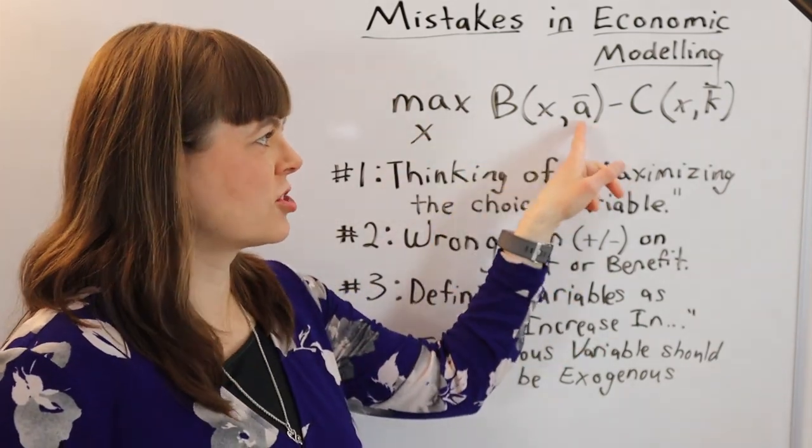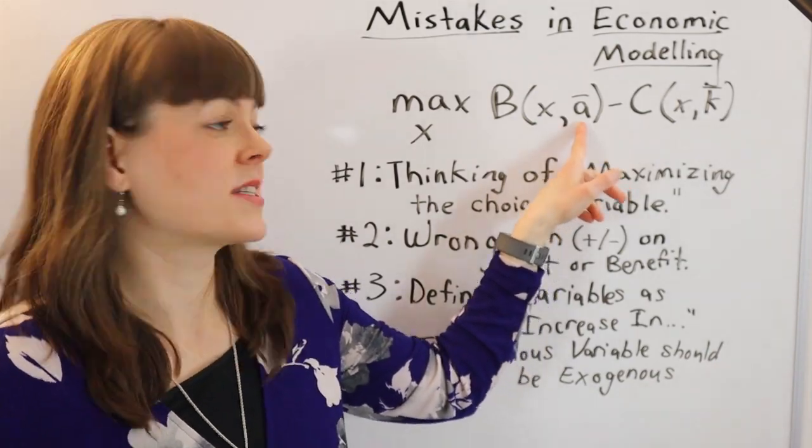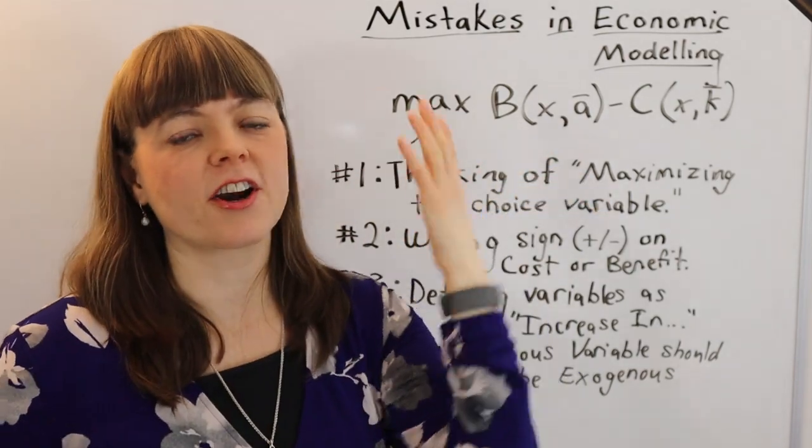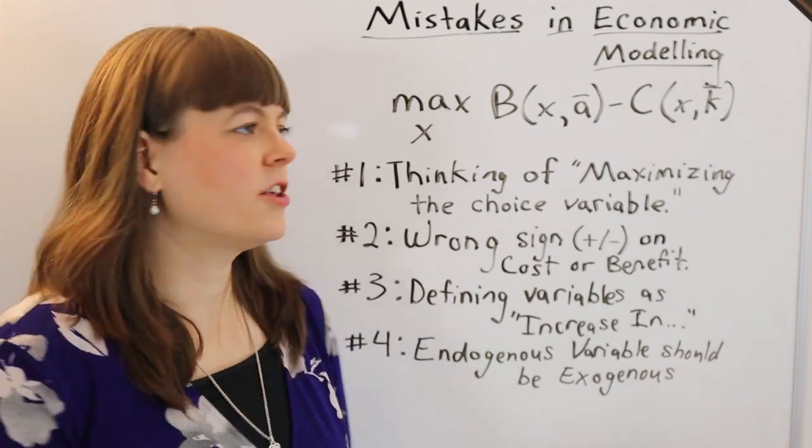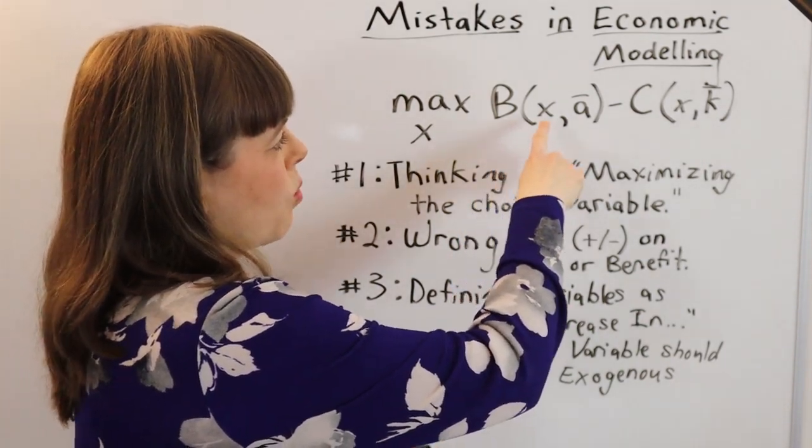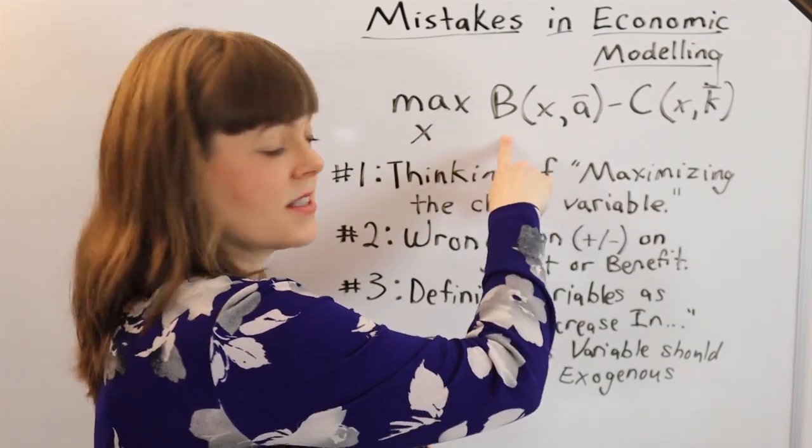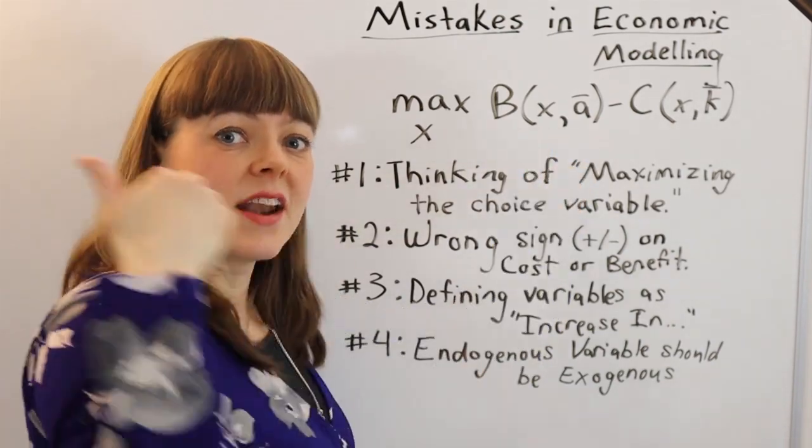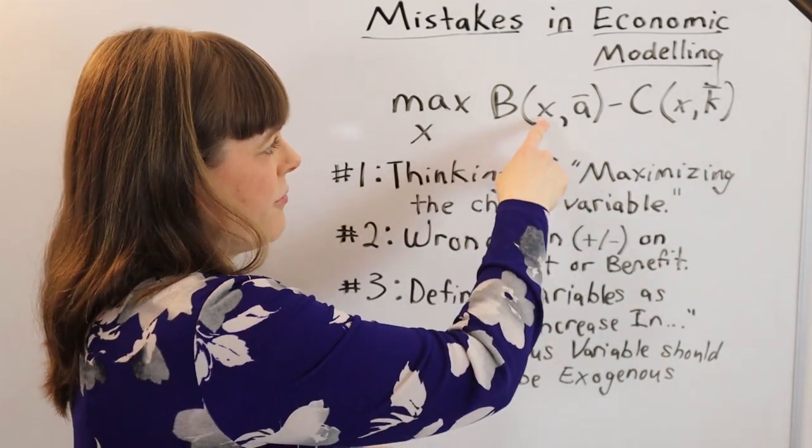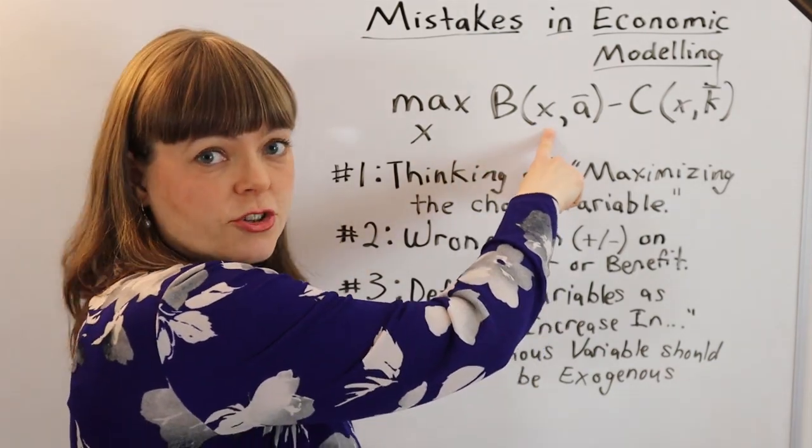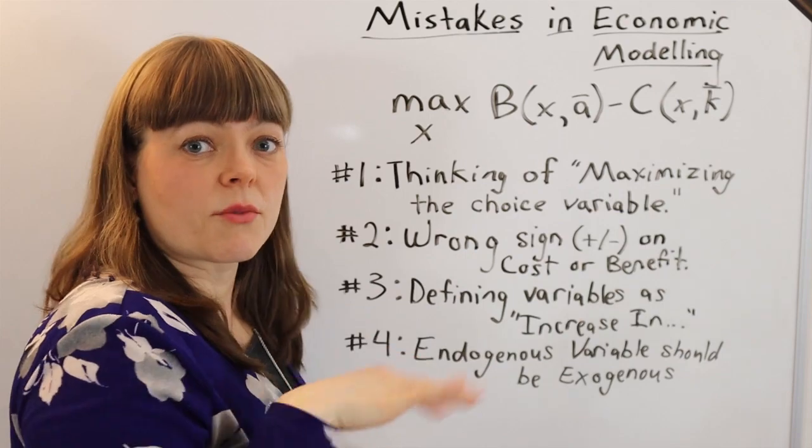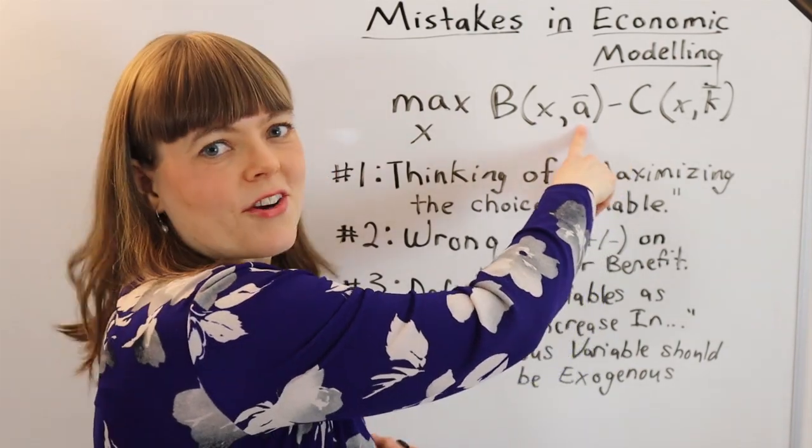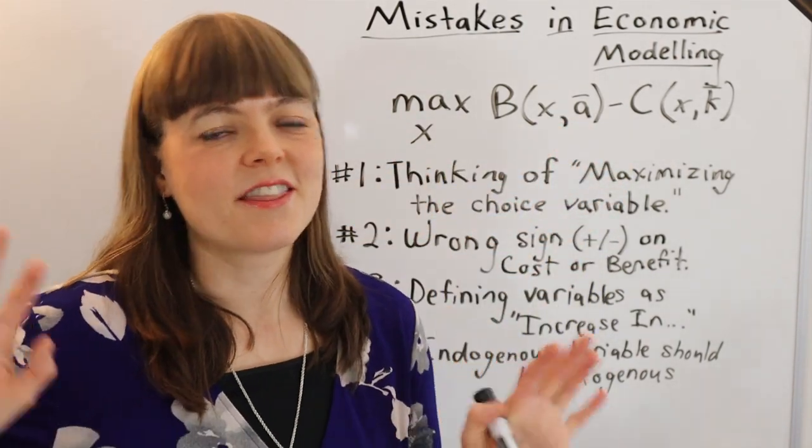So extraversion should be an exogenous variable that's going to influence something else, like joy from partying, where this function is going to be higher if you're extroverted. And checking for that, basically, when you go through checking a model, you're going to ask, when I increase my choice variable, does this thing change? And if it changes in response to you increasing your choice variable, then it is endogenous. You're good. If you think about it carefully and you realize when you change your choice variable up or down, this would not respond, then that really should not be an endogenous variable. It should be an exogenous variable, and you're going to need to rearrange the variables in your model.